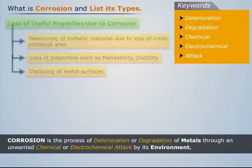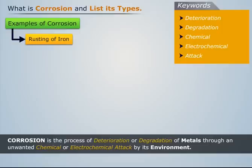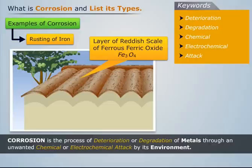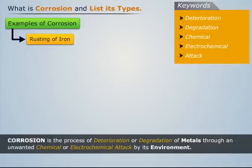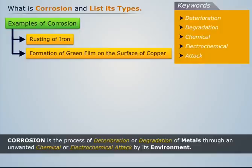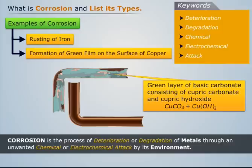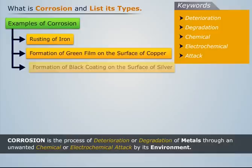The most common example of corrosion is the rusting of iron when exposed to atmospheric conditions. A layer of reddish scale of ferrous-ferric oxide is formed on the surface of iron, and as a result, iron becomes weak. Another example of corrosion is the formation of a green film on the surface of copper. In this case, a green layer of basic carbonate consisting of cupric carbonate and cupric hydroxide is formed on the surface of copper when exposed to moist air containing carbon dioxide.